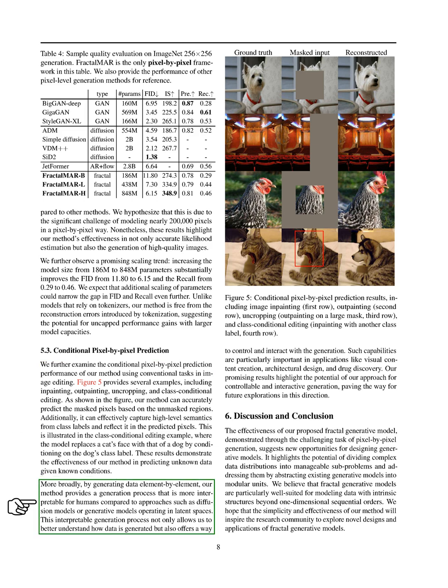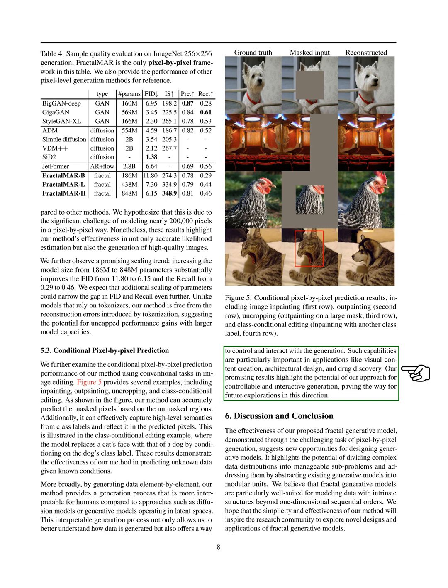Moreover, by generating data one element at a time, our approach is more understandable for humans compared to other methods like diffusion models or generative models that work in hidden spaces. This clearer generation process helps us grasp how data is created and allows for better control and interaction during generation. Such features are crucial for applications in visual content creation, architectural design, and drug discovery. Our encouraging results emphasize the potential of our method for controllable and interactive generation, opening up avenues for future research in this area.